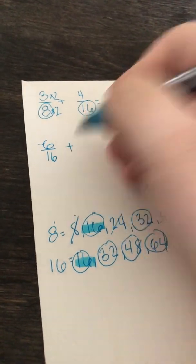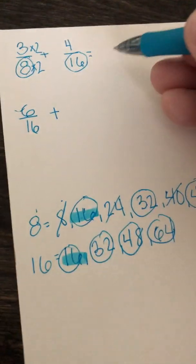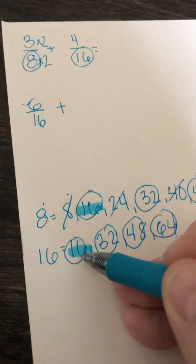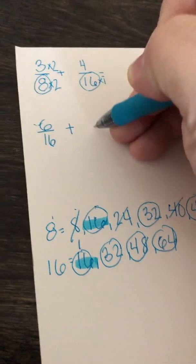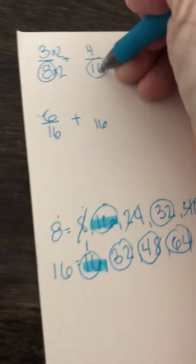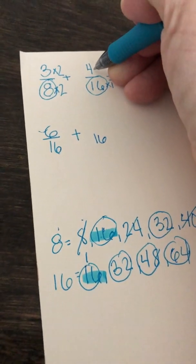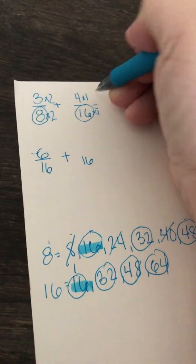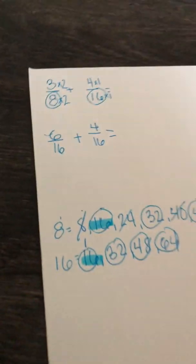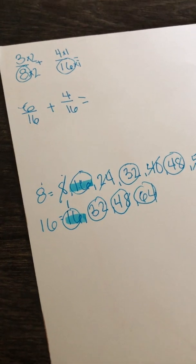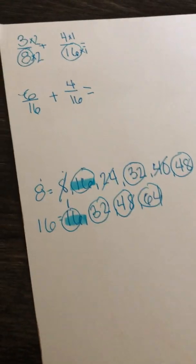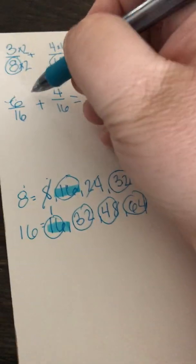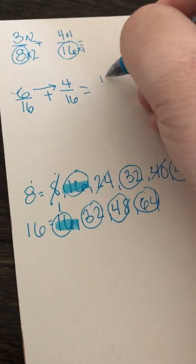We need to bring down that addition symbol. Now how many times do we need to skip count to get to 16? That looks like a 1. So 16 times 1 would be 16. And whatever we do to the denominator, we need to do to the numerator. So 4 times 1 is 4. Now we look at our problem and we notice that the denominators are the same, and I wonder if now I can add them — and I sure can. 6 plus 4, because we add the numerators, 6 plus 4 is 10.